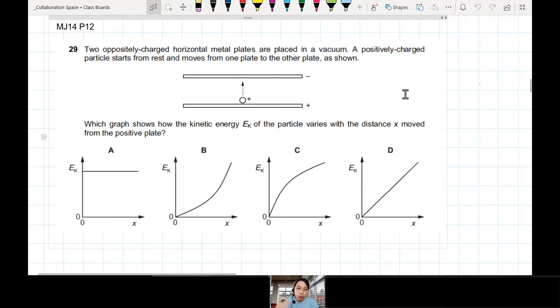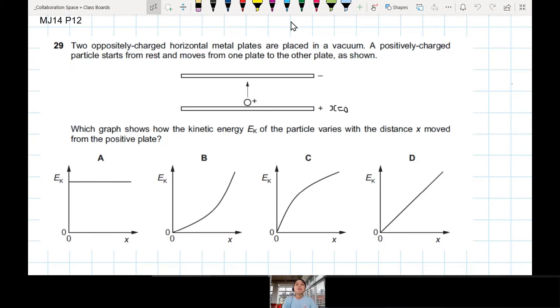Which graph shows how the kinetic energy of the particle varies with the distance moved from the positive plate? We start down here at x equals 0, and you slowly move up to some position x. How would we find kinetic energy against x? If you have a negative plate and positive plate,